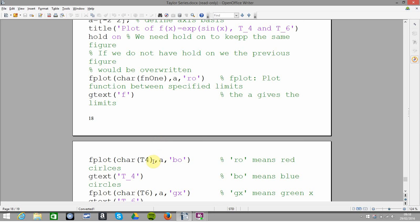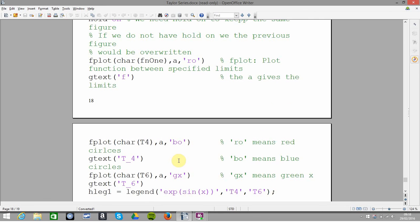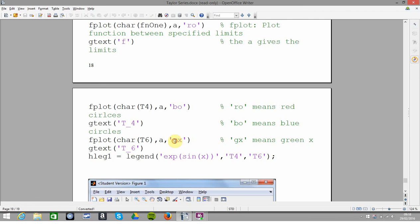Fplot T4, that's the approximation up to x cubed, blue circles. And GX is green X's.